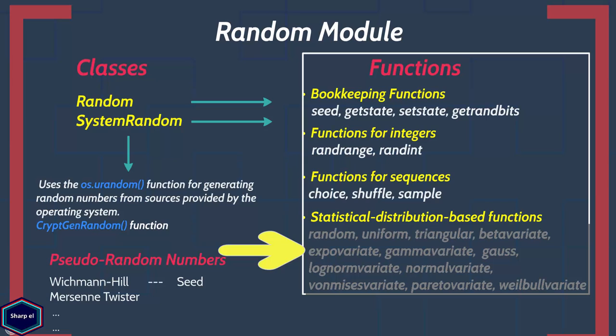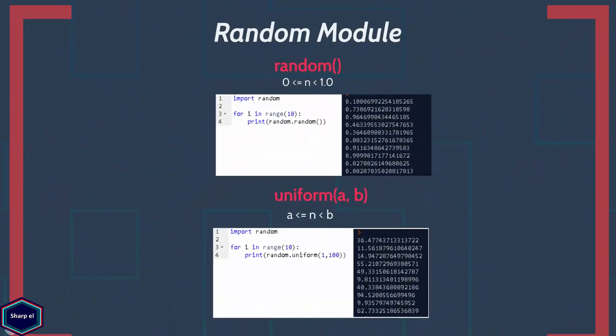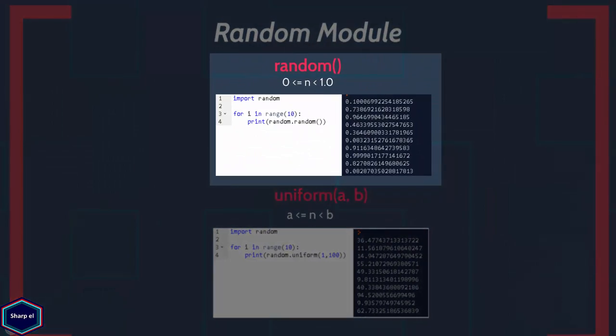Now let's start with the most important function, that is random(). Almost all random module functions depend upon this function. The random() function returns a random float value n from a uniform distribution such that n is greater than or equal to 0 but less than 1.